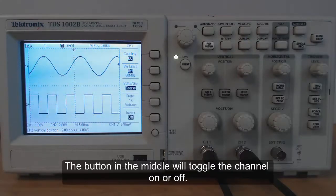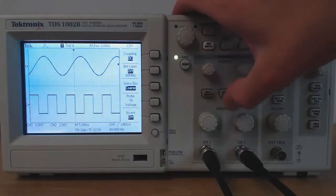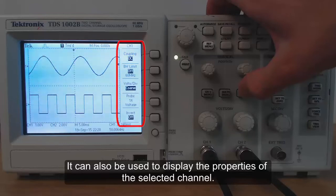The button in the middle will toggle the channel on or off. It can also be used to display the properties of the selected channel.